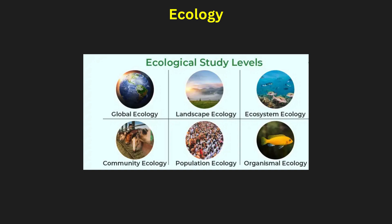Ecology studies the interconnection between living organisms and their environment. Ecosystems — whether forest, grassland, desert or aquatic systems — function through the interaction among their biotic and abiotic components. The Sundarban mangrove ecosystem exemplifies unique biodiversity. Food chains and food webs illustrate energy flow within the ecosystem, while biogeochemical cycles demonstrate matter recycling. Cycles like carbon, nitrogen and phosphorus are crucial for managing ecological balance.